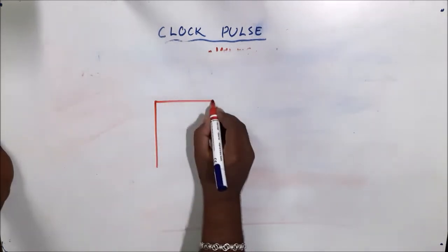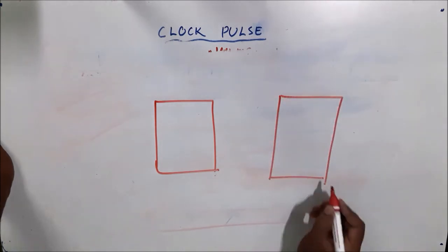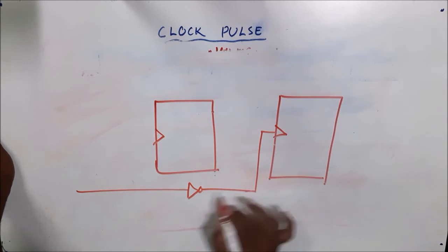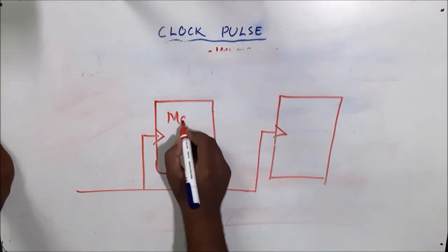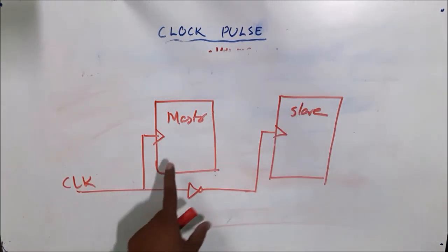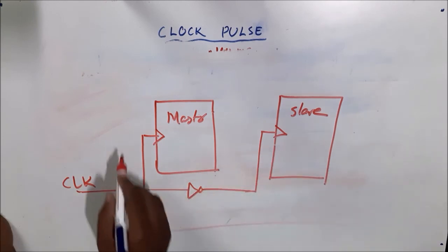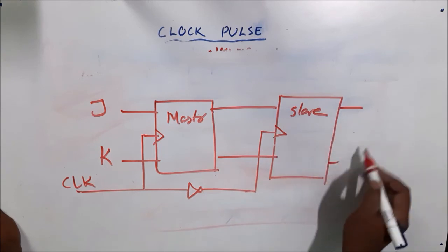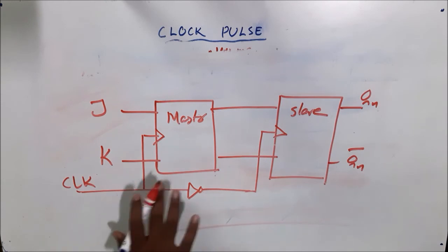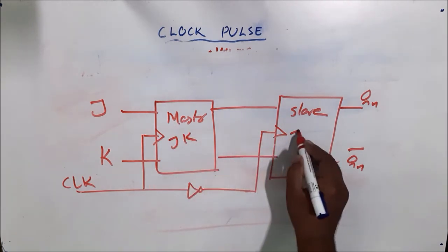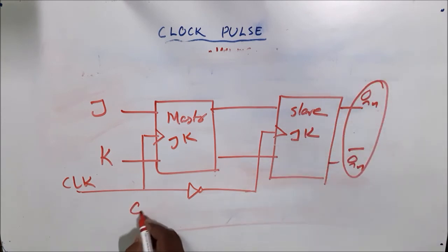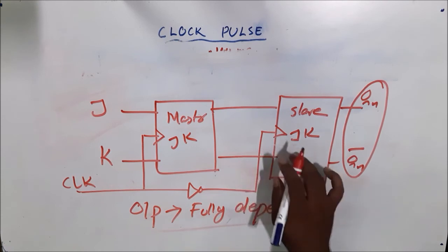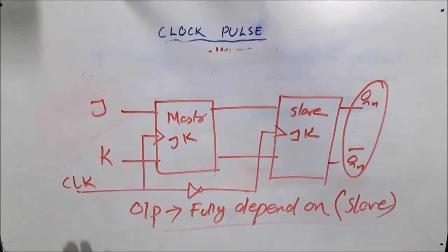We will take two JK flip-flops: the first is the master and the second is the slave. The clock given to each is opposite — the master and slave receive complementary clocks. The inputs are J and K, and the output of the master is fed to the slave, giving Qn and Qn complement. The output state fully depends on the slave. This is the master-slave operation.